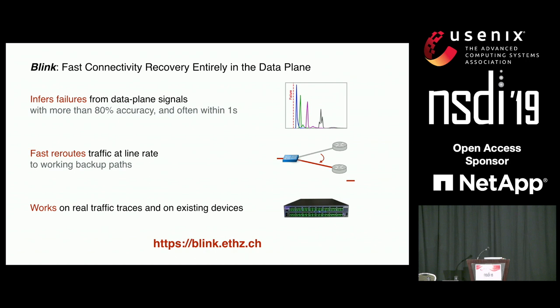Second question: what happens when everybody switches to QUIC and sequence numbers are encrypted? If all traffic is encrypted, Blink wouldn't work. However, we don't need a large portion of traffic to be TCP — we just need a small portion. Even as QUIC usage increases, as long as there is a small portion of TCP traffic, Blink should still work, because we only need 64 flows per prefix to detect failures.